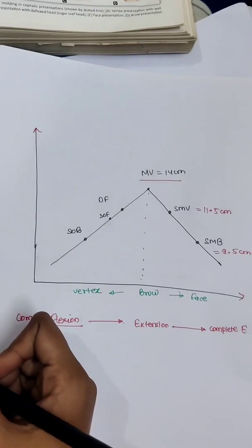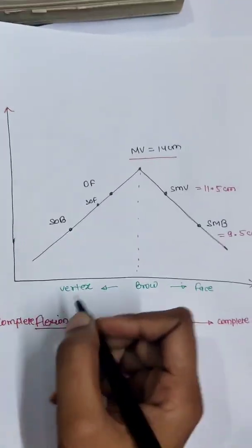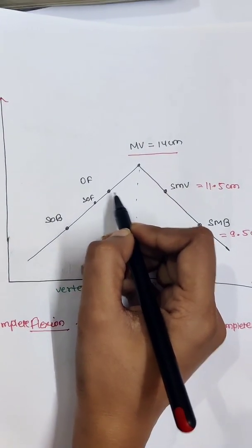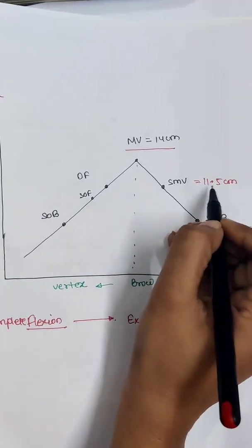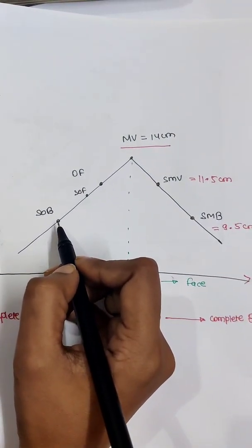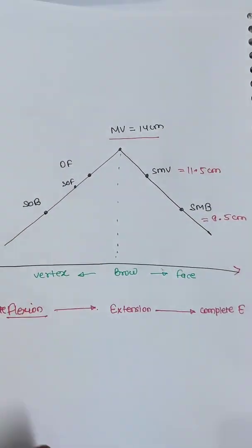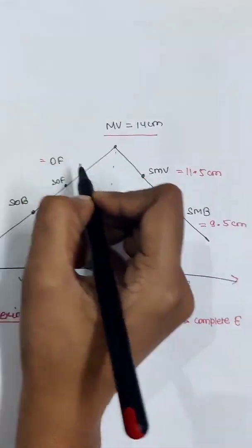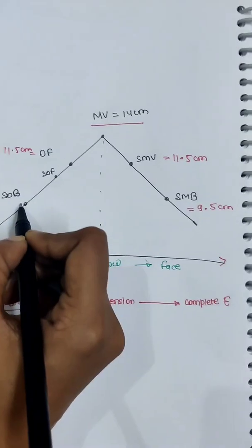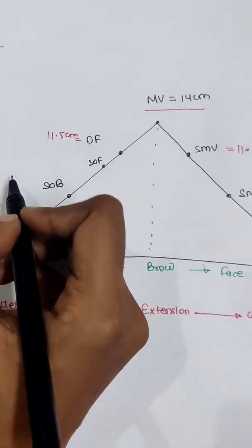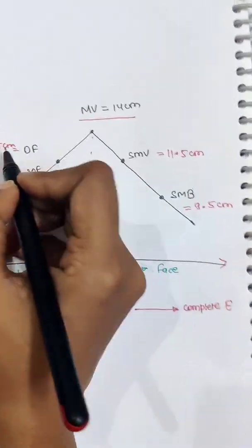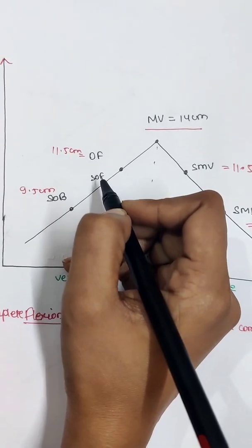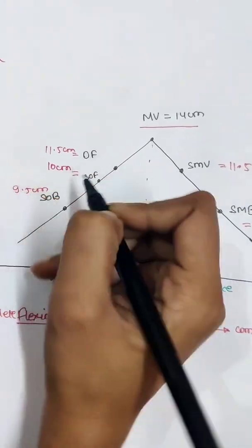I have put the entire chart into a simple line diagram. Mento-vertical is at the highest level at about 14 centimeters. Occipitofrontal and submentovertical are at the same level, both approximately 11.5 centimeters. Suboccipitobregmatic and submentobregmatic are also at the same level, both approximately 9.5 centimeters — you can remember either one and recall the other. Suboccipitofrontal is placed in between, at approximately 10 centimeters.